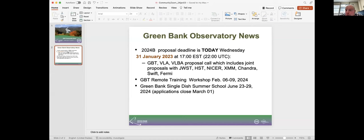We have the GBT Remote Training Workshop that's going on next week, February 6th to 9th. And the Green Bank Single Dish Summer School will be occurring this summer. The dates for that are June 23rd to 29th, and we'll be taking applications up until March 1st. So if you're a graduate student, somebody that would be interested in attending the summer school, please feel free to share that information and have them apply. So I'm going to go ahead and hand it off to Jay, who will be introducing our speaker for today.